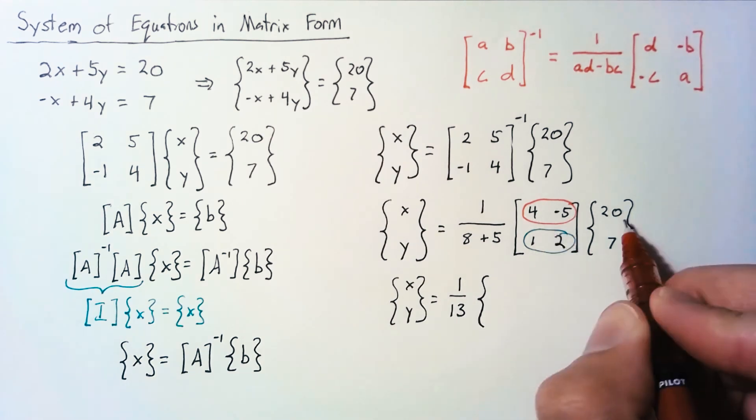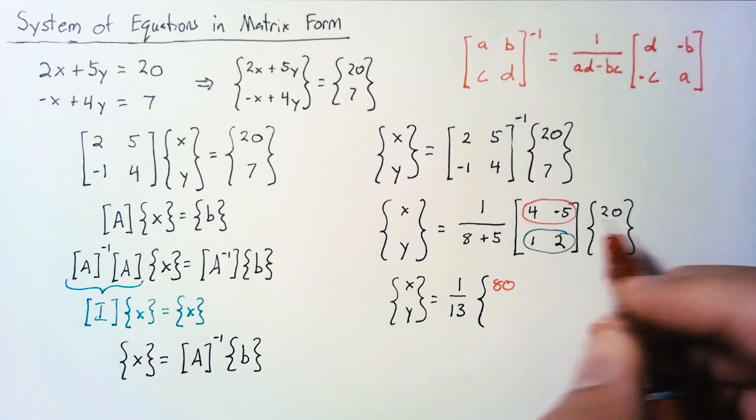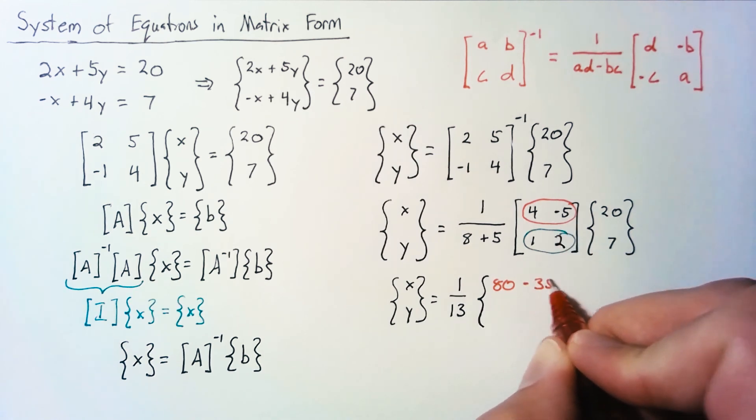So our first row here says that we have 4 times 20, so this is 80, plus negative 5 times 7, which is going to be minus 35.